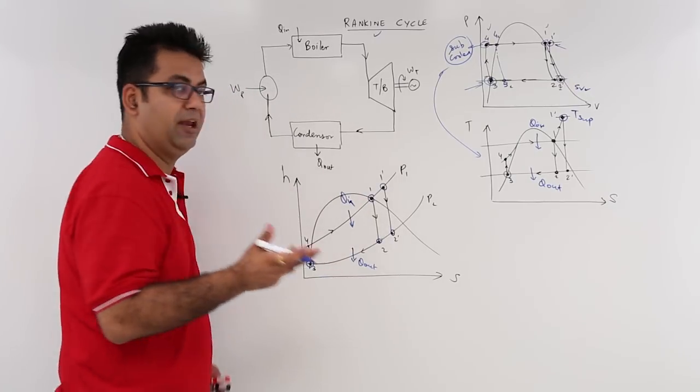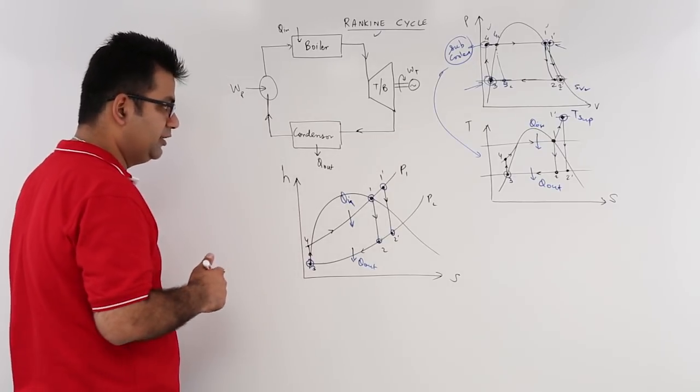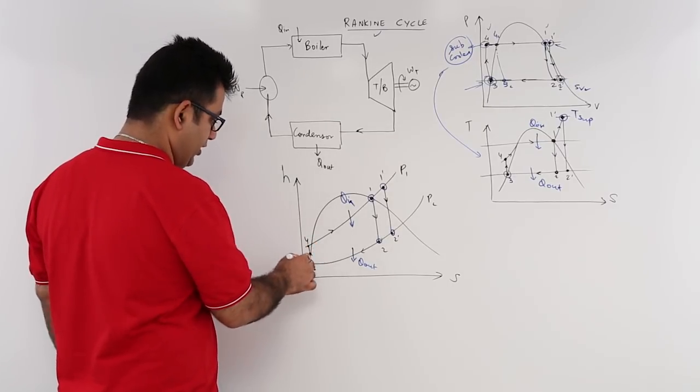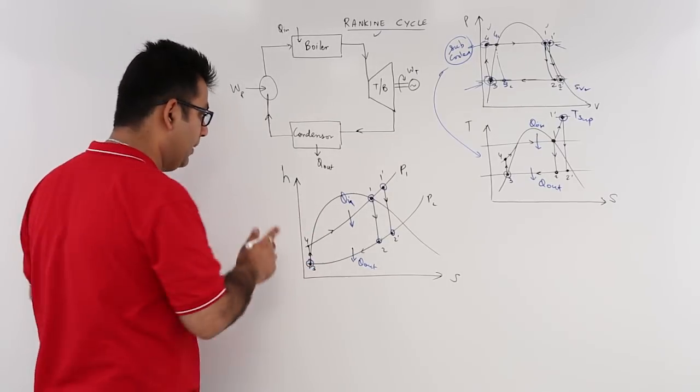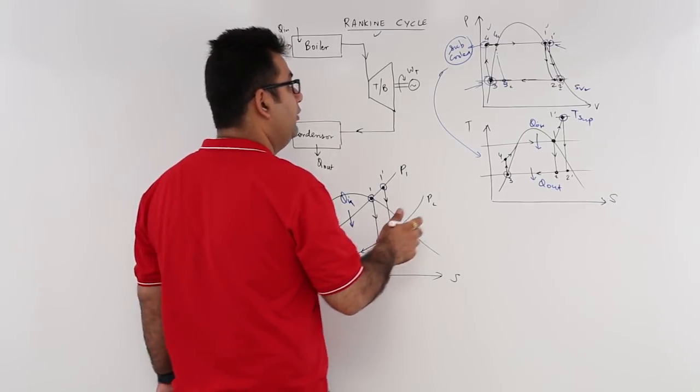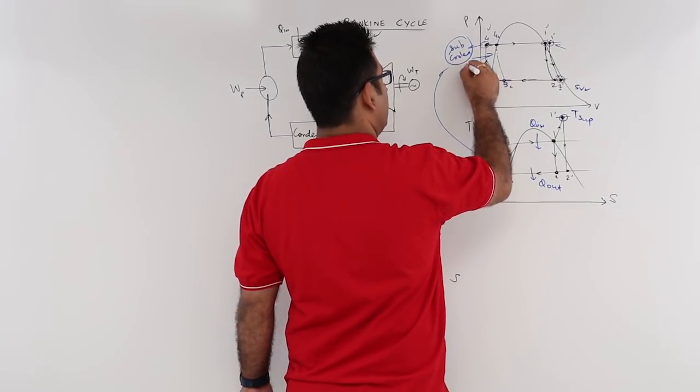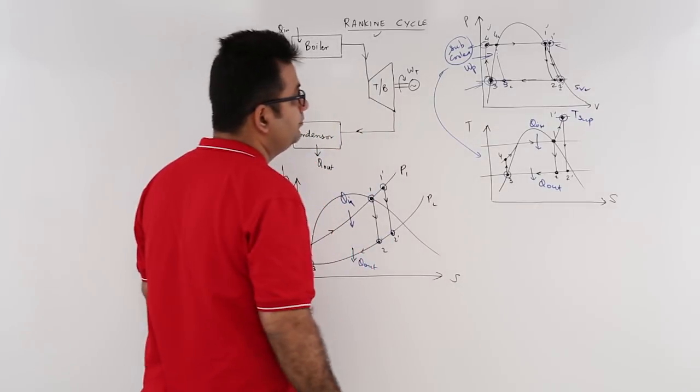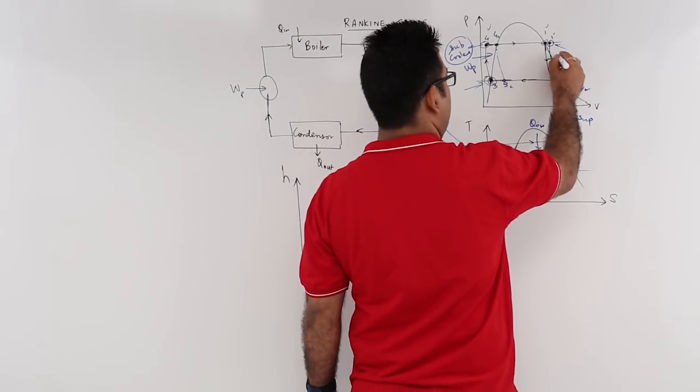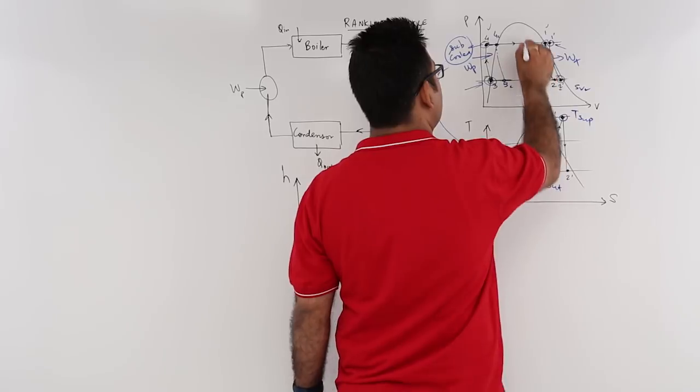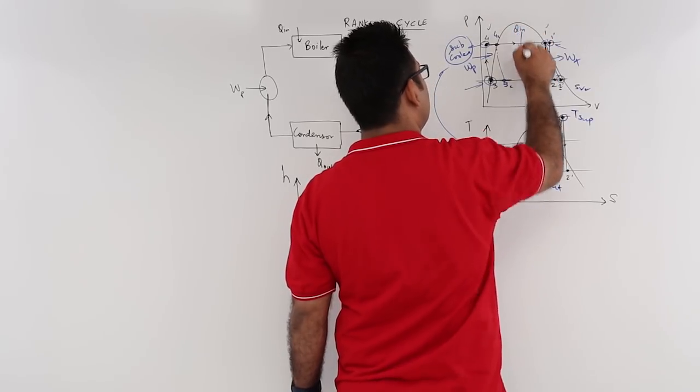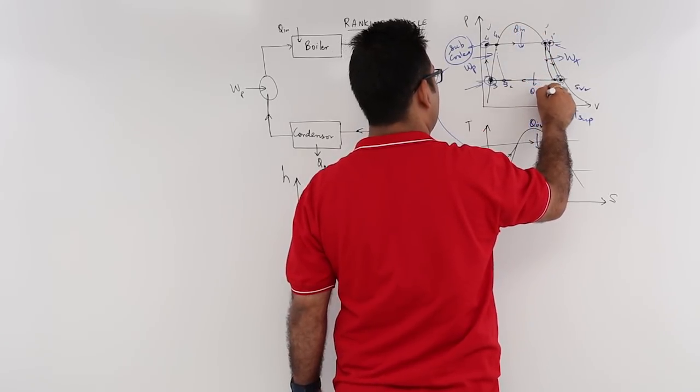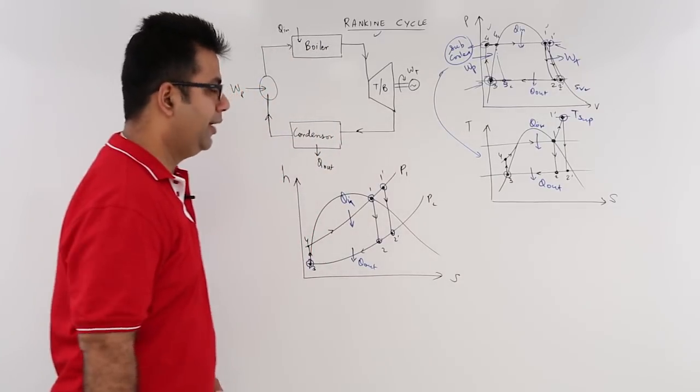Now let us look at some mathematical values. Let us start from 0.3, that is the pump work. So 3 to 4 is pump work. 1 dash to 2 dash is turbine work. This is Q in and this is Q out.